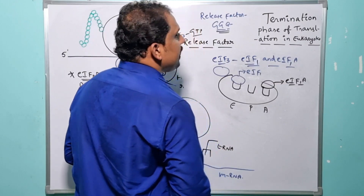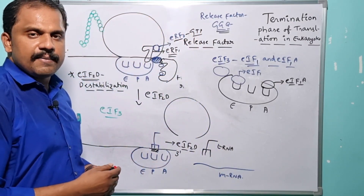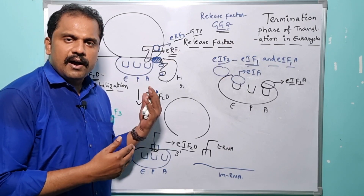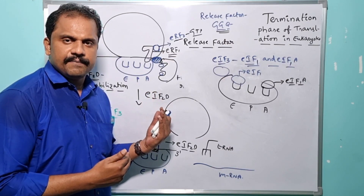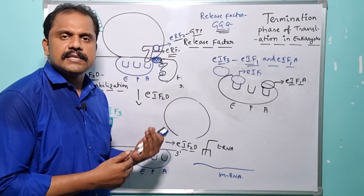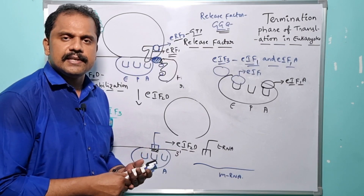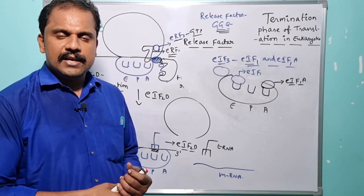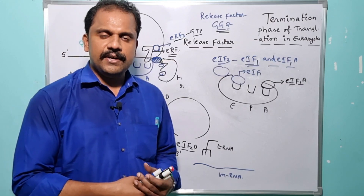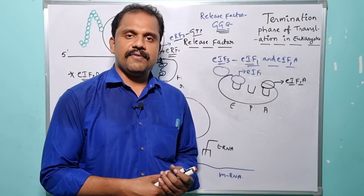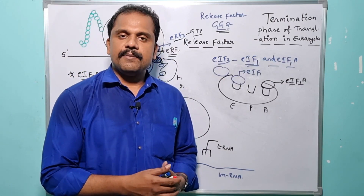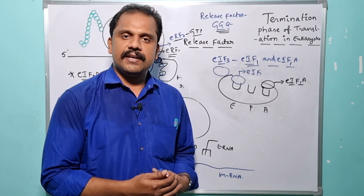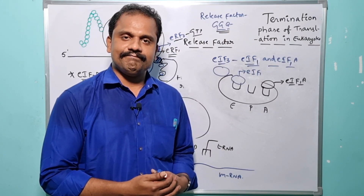Once eIF1 is successfully recruited at the E site and eIF1A is successfully recruited at the A site in the presence of eIF3, the termination phase of the translation mechanism is successfully completed. These are all the various strategies which take place during the termination phase of translation in case of eukaryotes. I hope this video will help you. If you like this video, hit the like button, share it with your friends, and subscribe to the channel for more videos. Thank you.